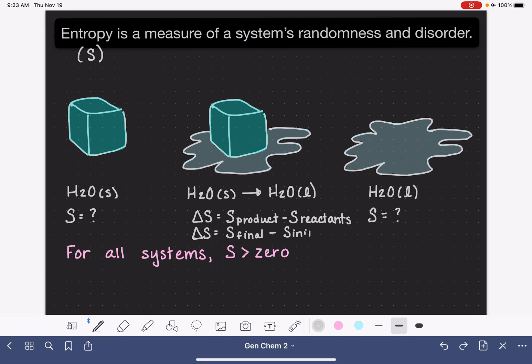So if we know the value of the entropy of our products, and we also know the value of the entropy of our reactants, we could very easily calculate the change in entropy for some sort of process.